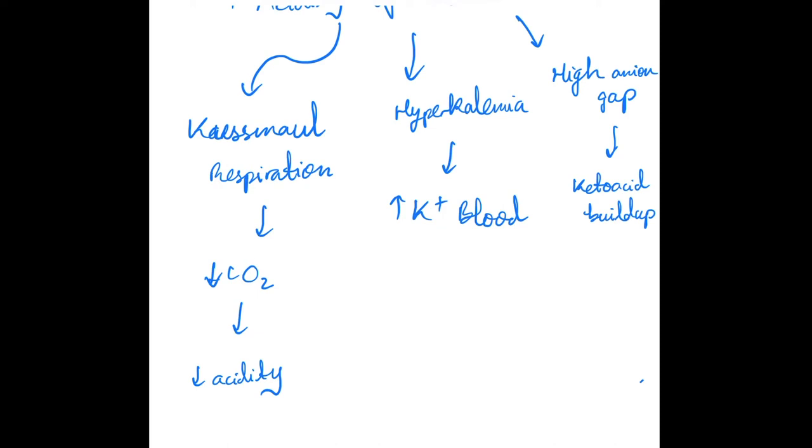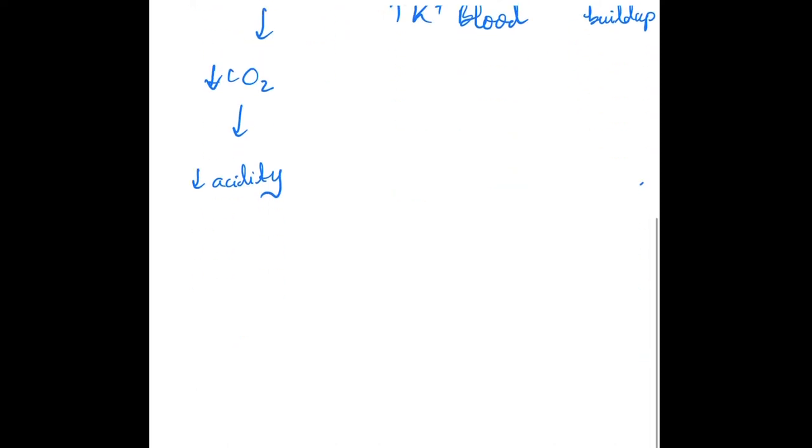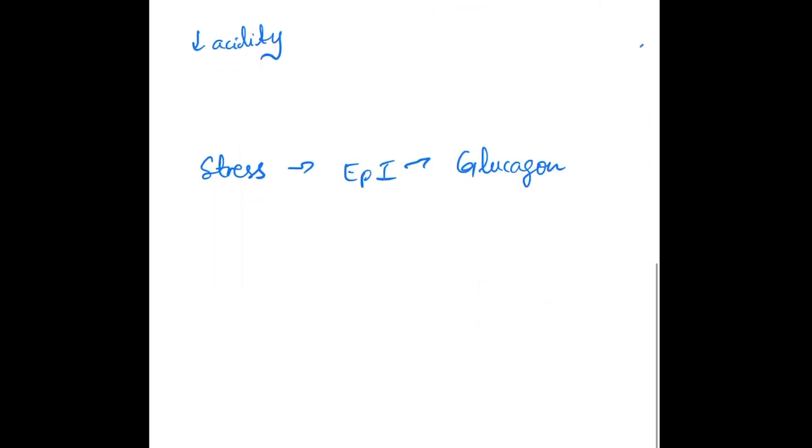During stress levels, which can be increased during infection, we have epinephrine release, which results in glucagon release. This can exacerbate the ketoacidosis as ketone bodies are used as an alternative energy source.